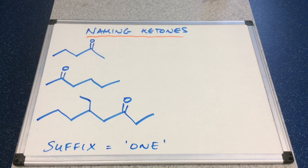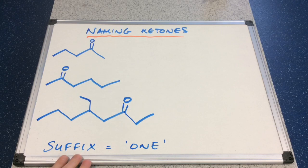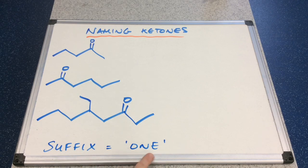So, there are three to try. Just to let you know, the suffix — the end of a ketone name — is 'one', not 'one' as in the number, but 'one' as in O-N-E.